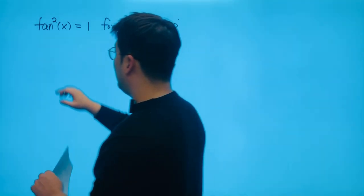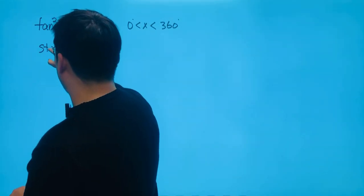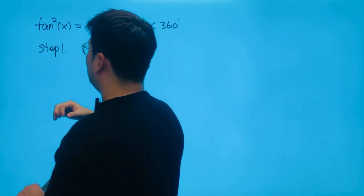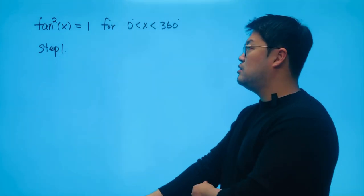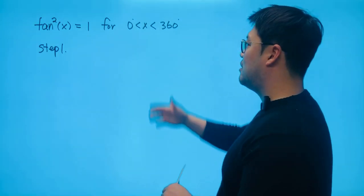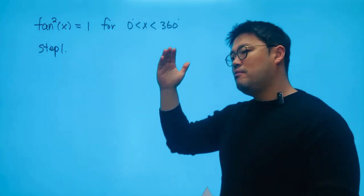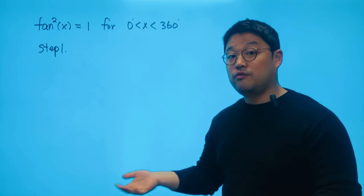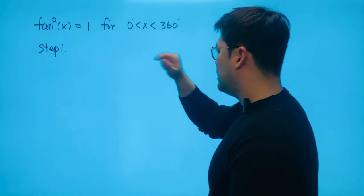Step number one that I would advise you to take is to use something called t substitution, using another variable to substitute tangent x. We know that starting from 0 to 360, mostly all values are written out for tangents.